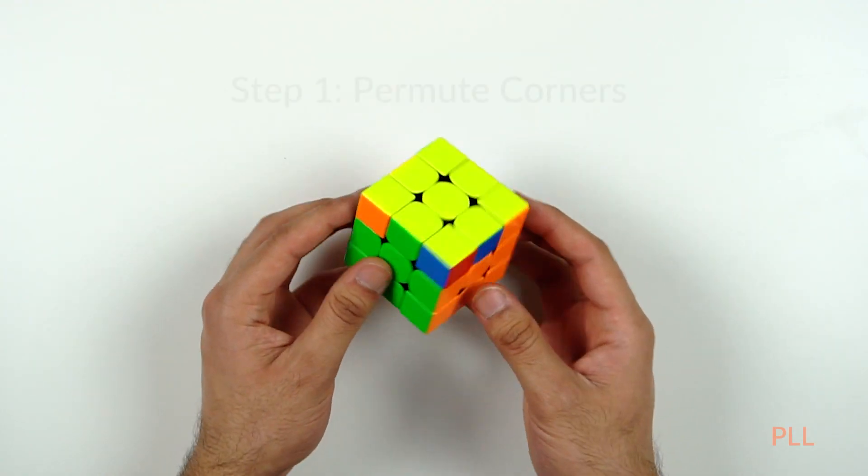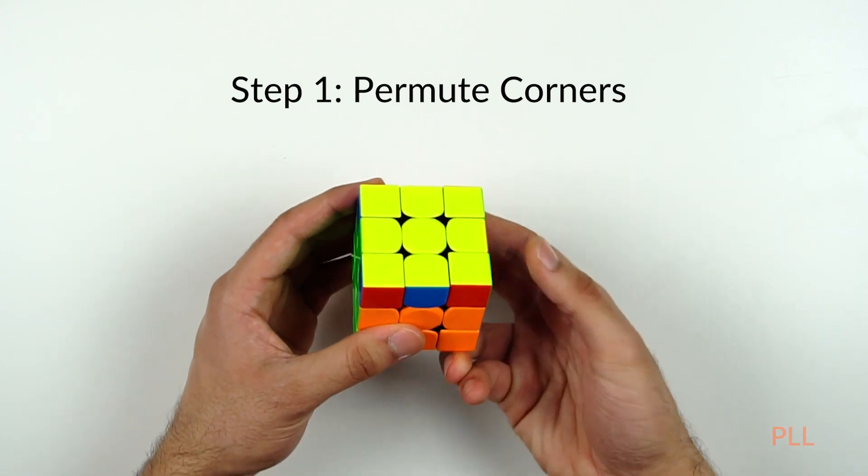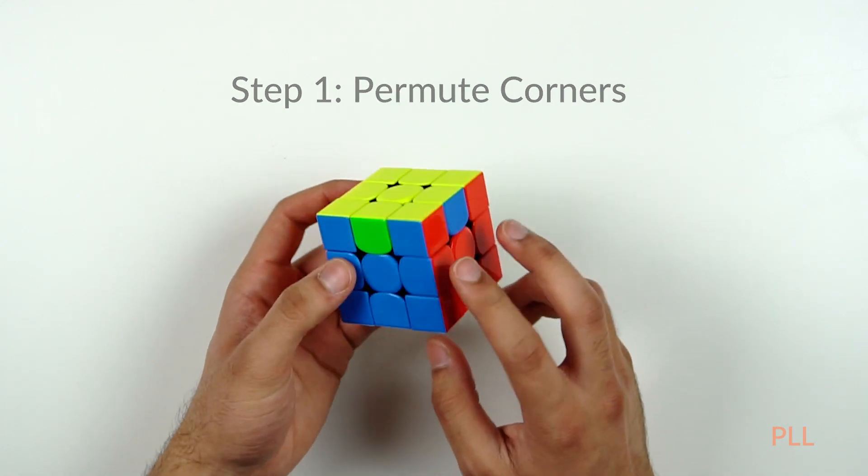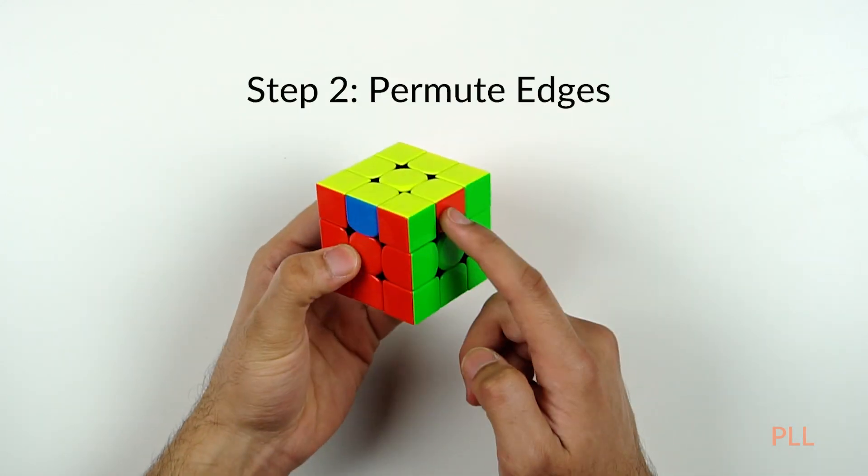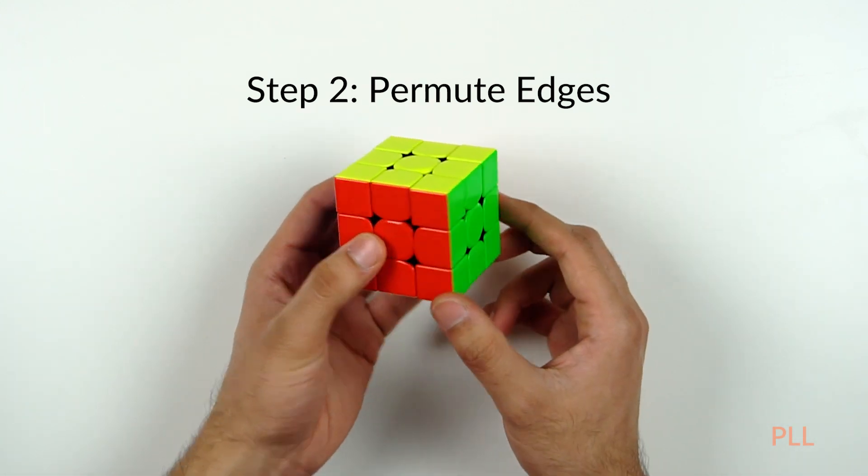Thankfully though, like with OLL, most people start by learning 2-look PLL, so that you can at least get the hang of the CFOP method and start solving it, even if you're not being that optimal. Similar to 2-look OLL, we permute the edges and the corners separately in 2-look PLL, except the difference here is that we're going to permute the corners first and the edges second. So you're going to have these headlights all around the cube when your corners are fully permuted, and finally we're going to permute the edges to solve the cube. This means we only have to learn two algorithms instead of learning all 21 cases for PLL.